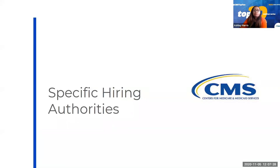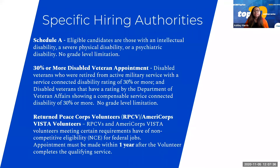Now we're going to touch on the specific hiring authorities that we recognize. First, we have Schedule A, which is for eligible candidates that have an intellectual, severe physical, or psychiatric disability. There is no grade level limitation for Schedule A. We also have the 30% or more disabled veteran appointment, which is for disabled veterans retired from active military service with a service-connected disability rating of 30% or more, or disabled veterans with a rating by the Department of Veterans Affairs showing a compensable service-connected disability of 30% or more. There is also no grade level limitation for this hiring authority.